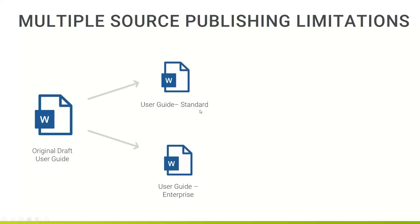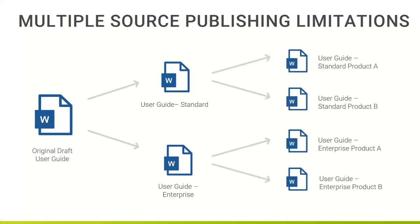I'll save two copies — maybe one called Standard, one called Enterprise — and make my changes. There might be some extra steps enterprise customers have to do compared to standard ones. But if something changes to the common elements, you still have to go into both. And what if product management comes along and says we need a guide for product A, a standard install guide for product B, and enterprise guides for both? Anytime we need something new, we save-as and start making changes.